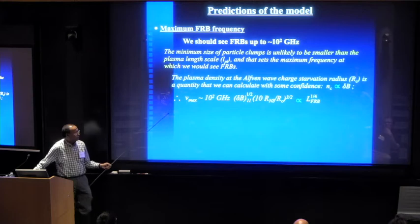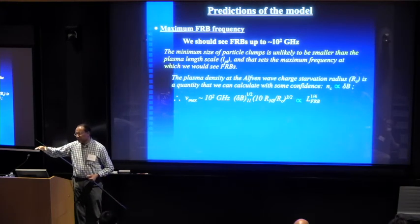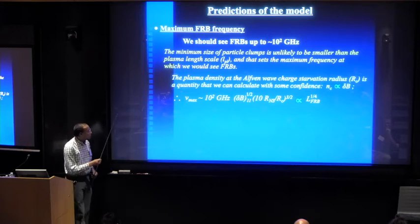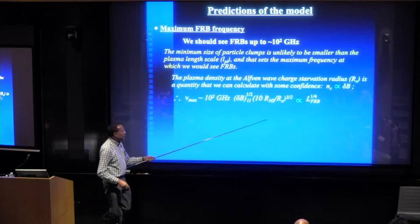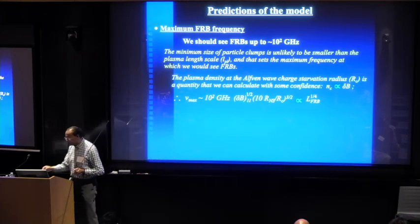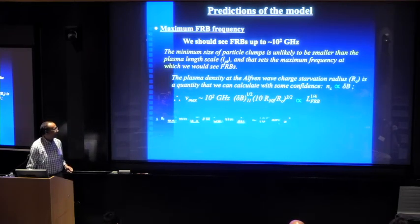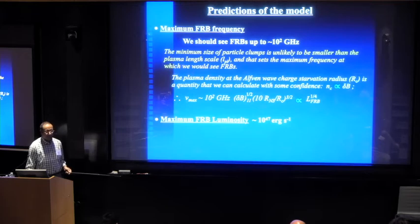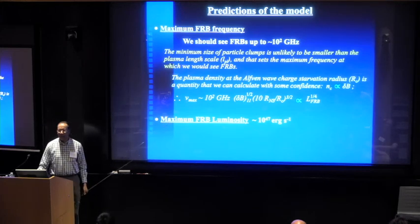And the plasma density at the charge starvation radius is something that can be calculated with some degree of confidence. So putting it together, seems like the maximum frequency at which we can see FRB should scale with the luminosity of FRB to a quarter power. So at least there is some correlation expectation according to this model.